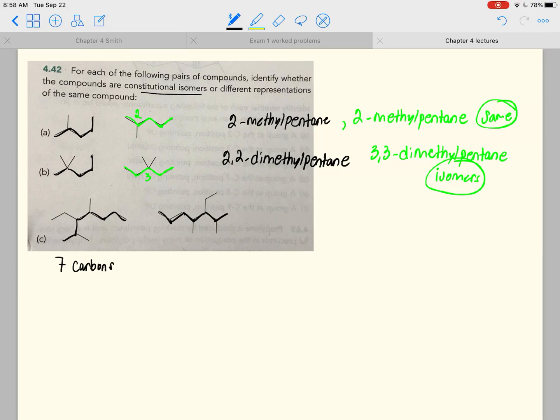This also has 7 carbons, and it has 3 substituents rather than 2. So we would want to number the longest chain. And we would need to look carefully.